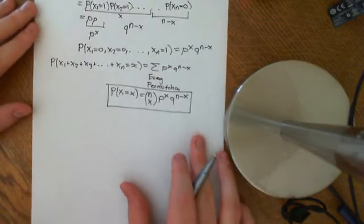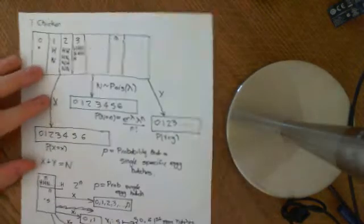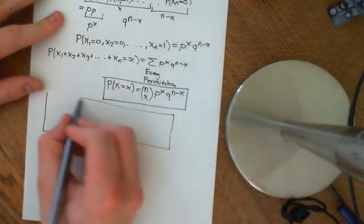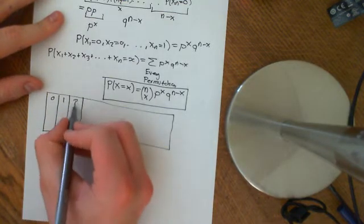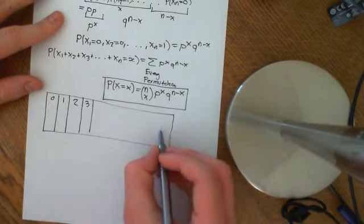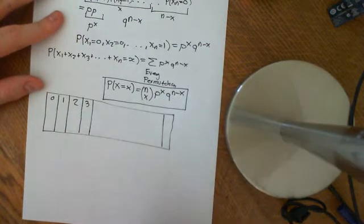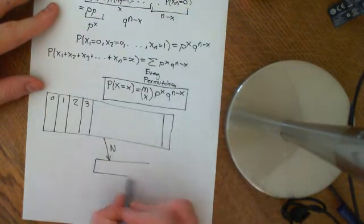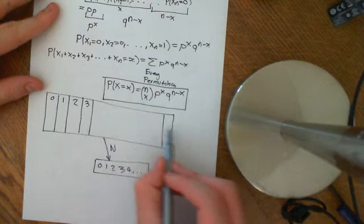Now we want the distribution of big X on the whole probability space. Going back to our picture: the chicken could have laid zero eggs, one egg, two eggs, etc. — any non-negative integer. So big N is a random variable taking values 0, 1, 2, 3, 4, and so on, ascribing to each outcome the total number of eggs laid.